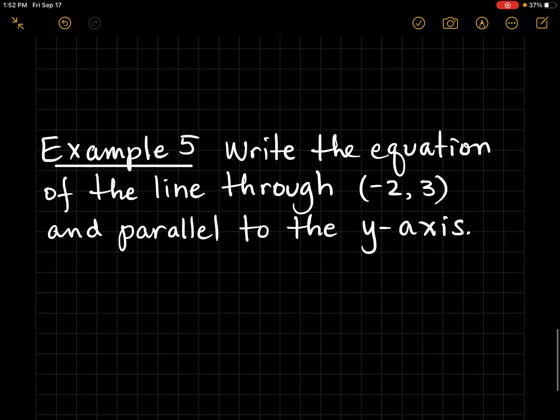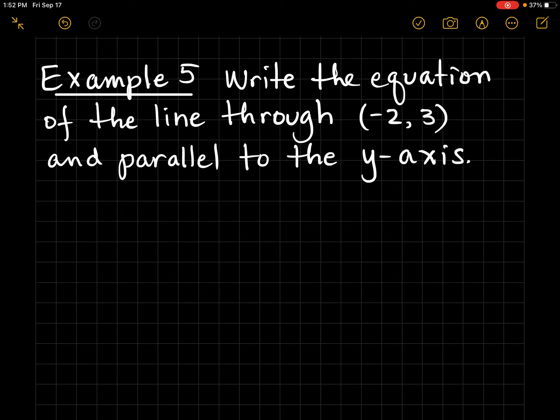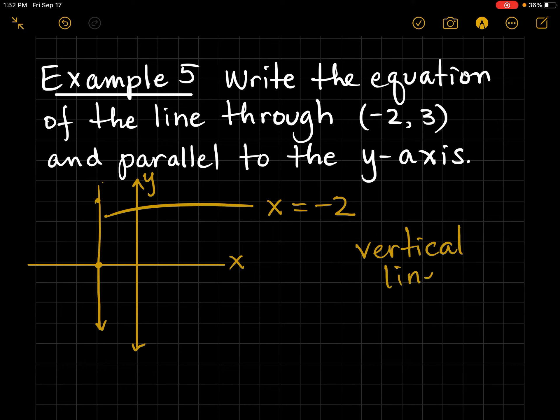Final example: Write the equation of the line through (-2, 3) and parallel to the X-axis. Let me think about this for a moment. Negative 2, 3 is here. And I want a line parallel to the Y-axis. Well, this is the Y-axis here. So parallel would be this line right here. The equation of that line is going through negative 2. So this equation is simply X equals negative 2. Remember, vertical lines are X-equations. Vertical lines are X-equations.